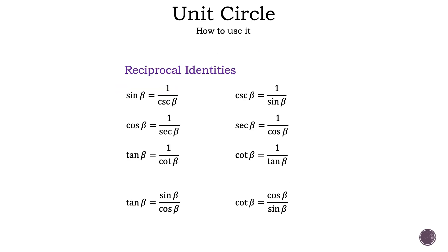Let's look at the reciprocal identities to show you why that is the case. Cosecant is 1 over sine, secant is 1 over cosine, and cotangent is 1 over tangent. And remember, tangent is equal to sine over cosine, and cotangent is the reciprocal.